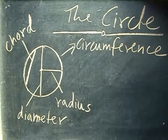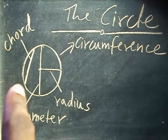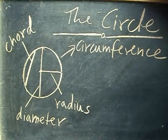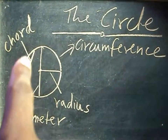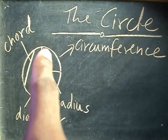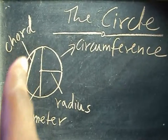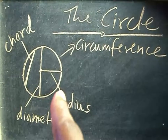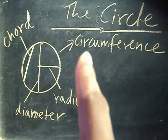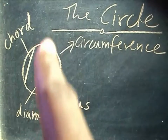We also have what is called a chord. A chord is a straight line running from one end to the next of the circle, but it doesn't necessarily have to pass through the middle. When it does pass through the middle, it becomes the diameter. So you have: the circumference, radius, diameter, and chord.